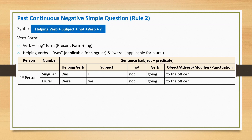First person singular: Was I not going to the office? This sentence starts with helping verb 'was', followed by subject 'I', negative word 'not', main verb 'going', and ends with a question mark.